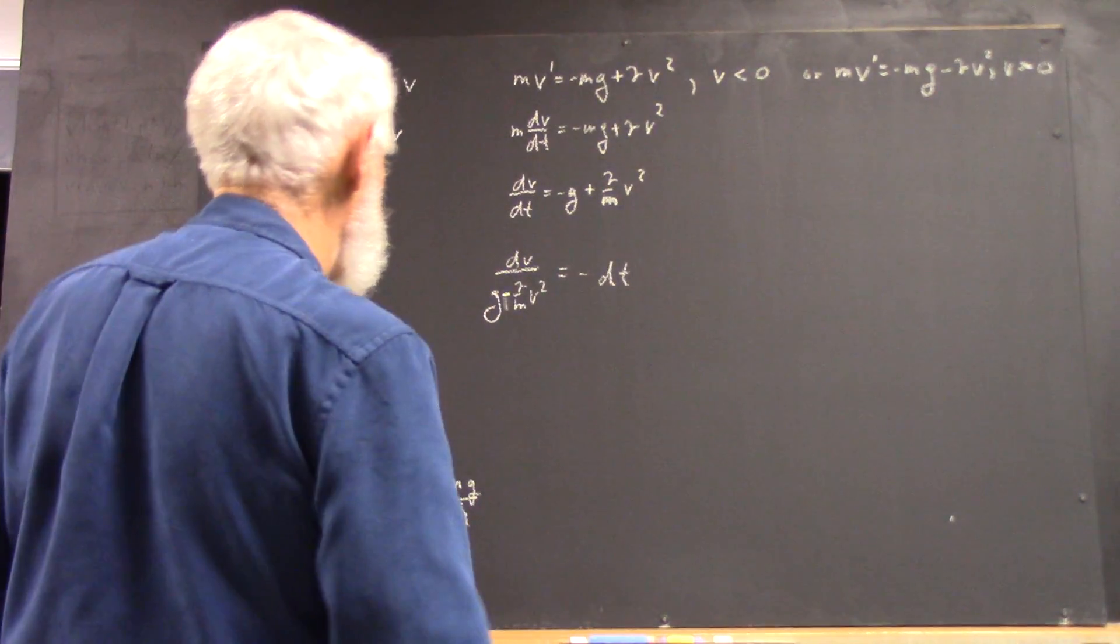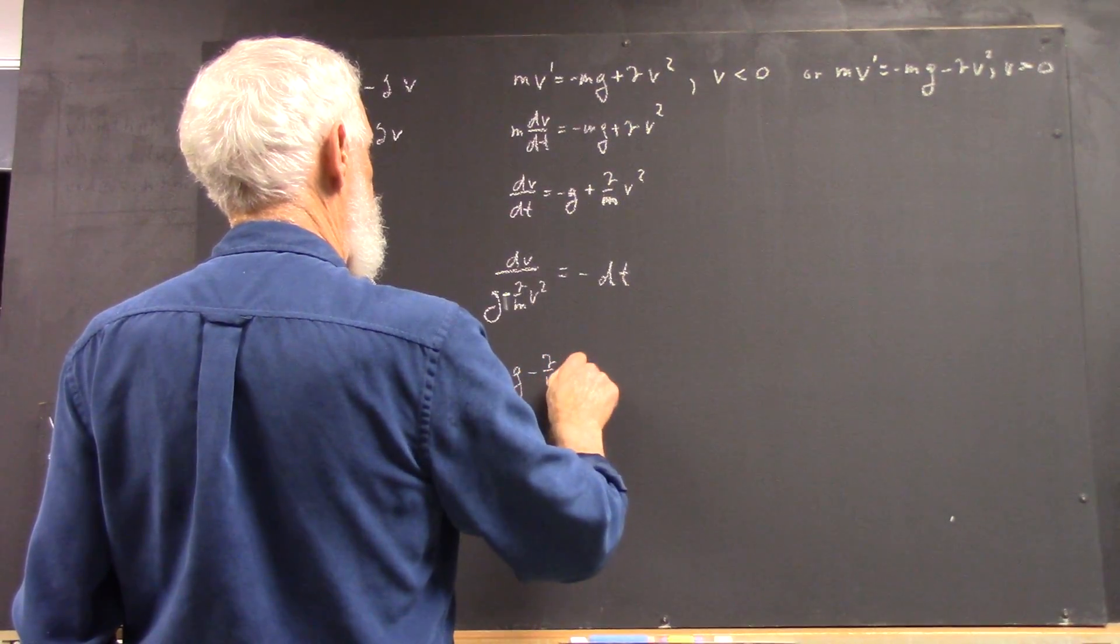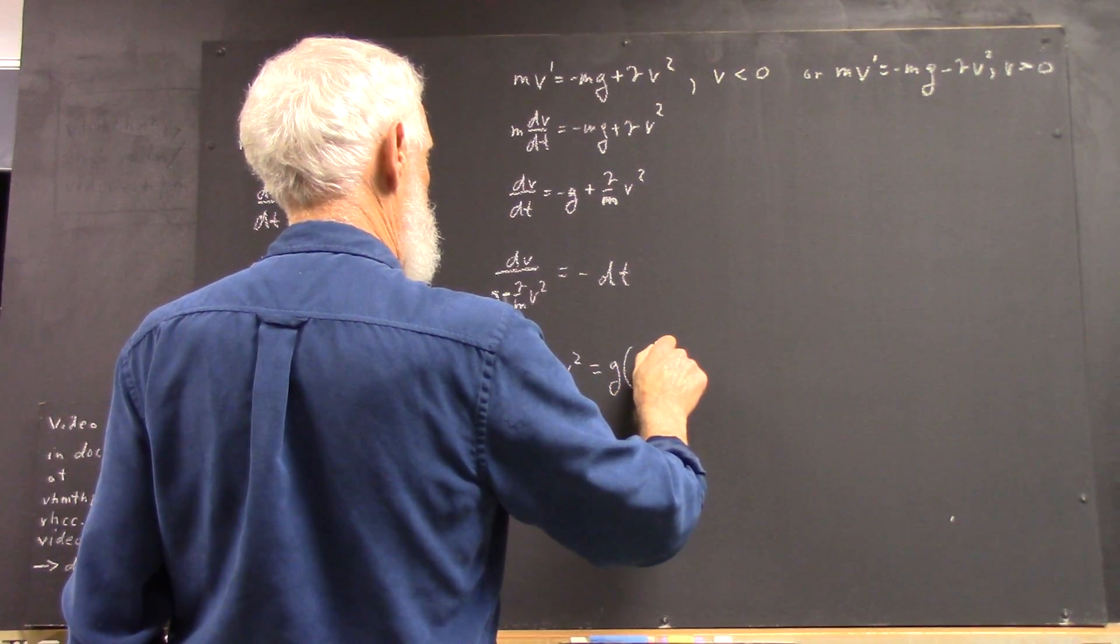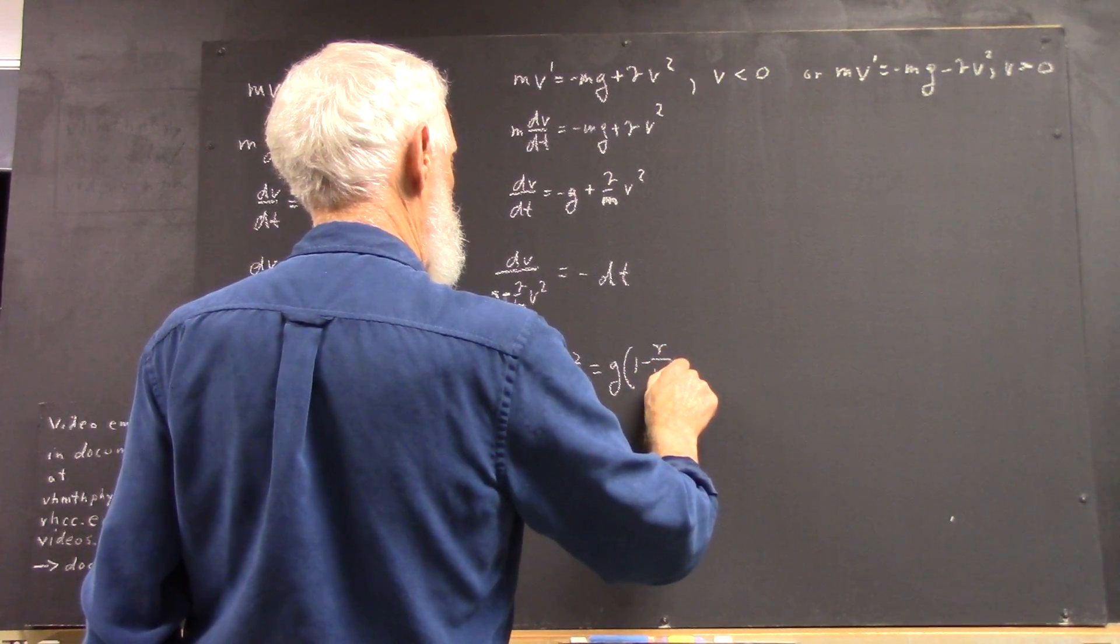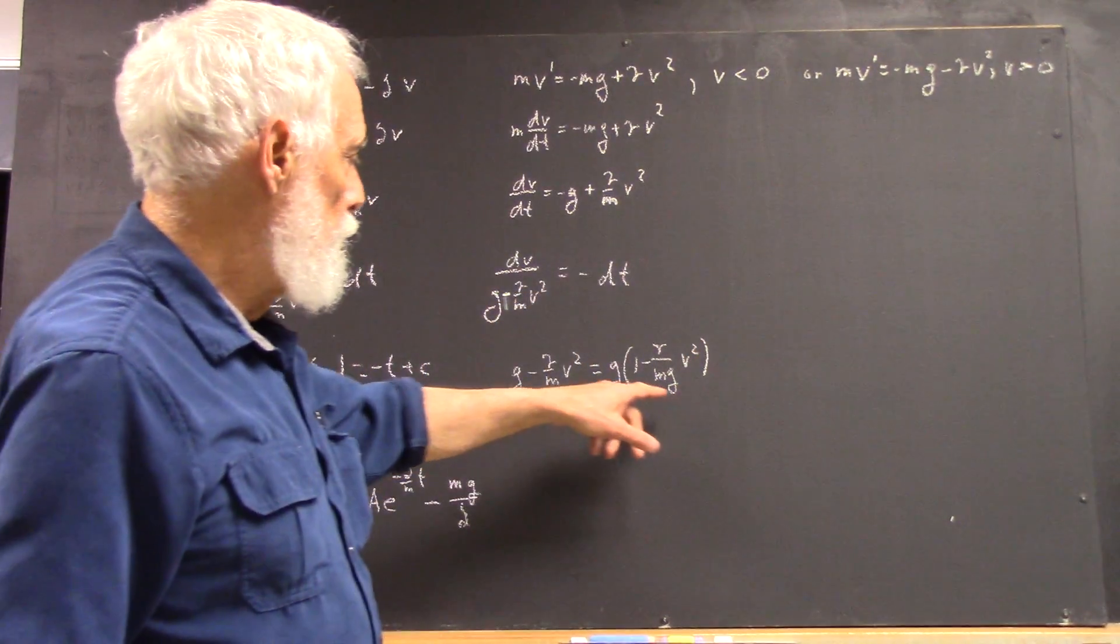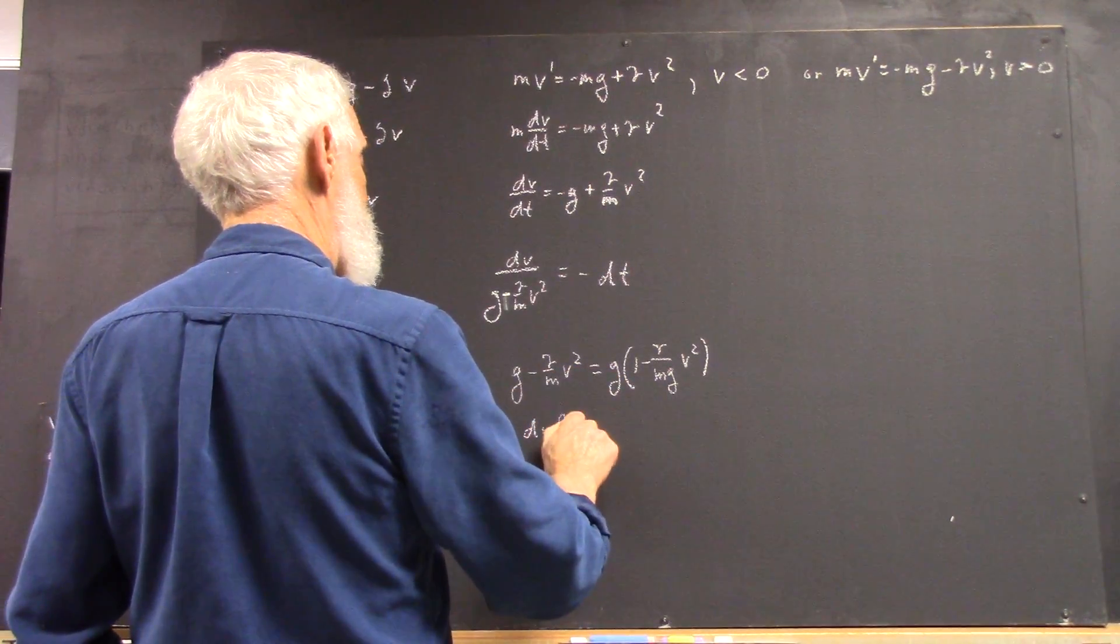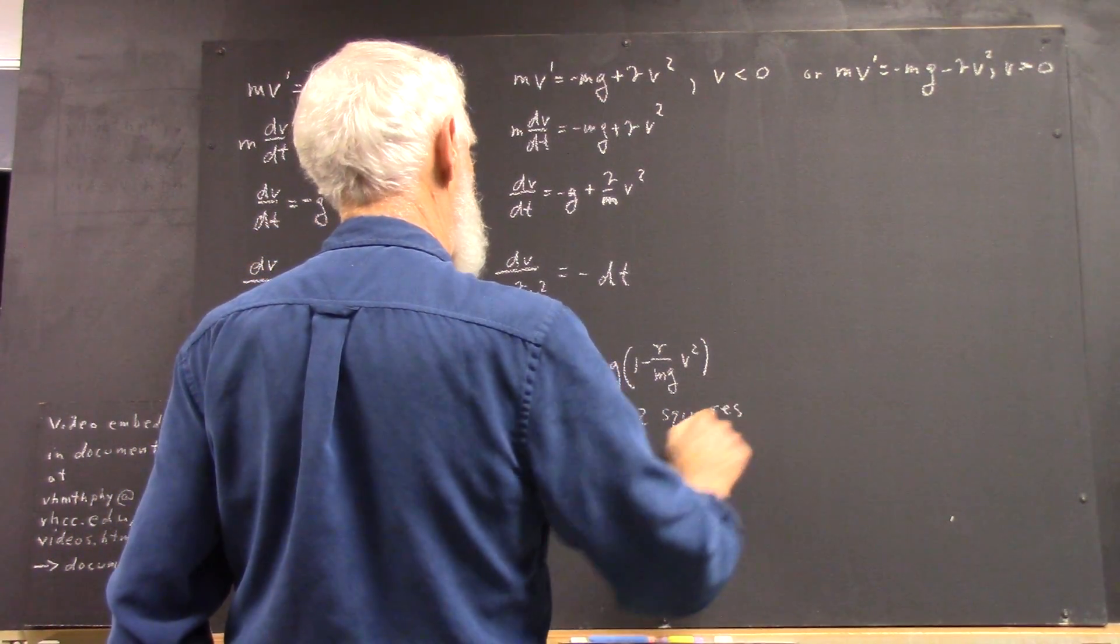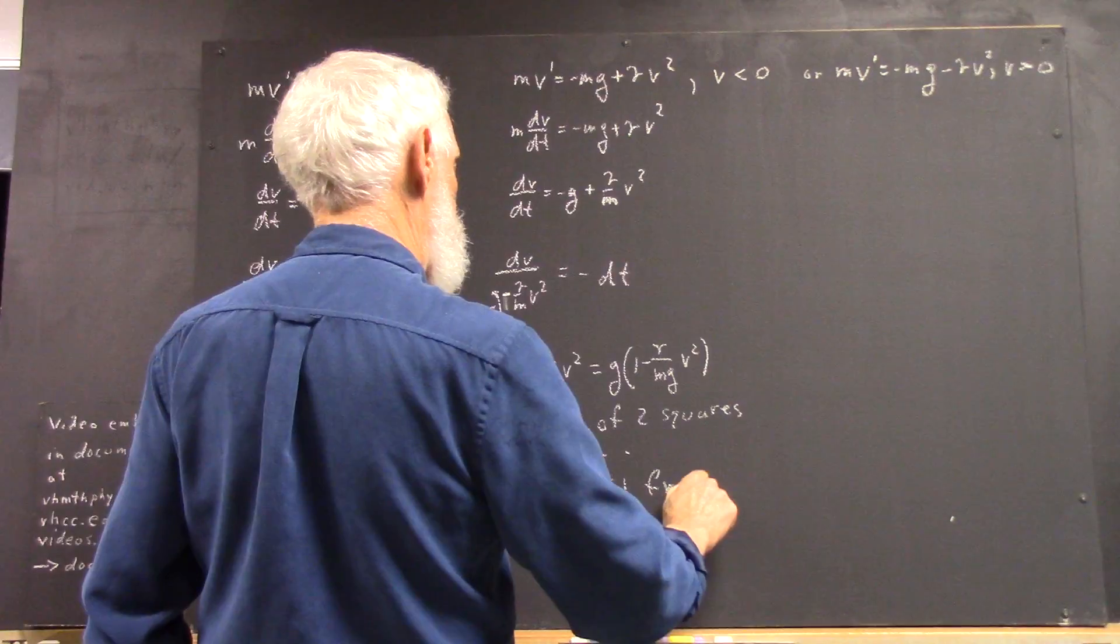In this case, note that—factor out the G, you get this. Factor out the G, this is a difference of two squares. And then that leads you to partial fractions.